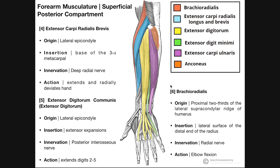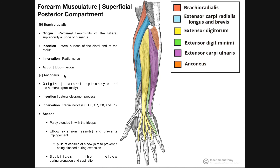The last two muscles are brachioradialis and the anconeus, which are technically part of the posterior compartment of the forearm but were covered in separate videos. Brachioradialis originates on the proximal two-thirds of the lateral supracondylar ridge of the humerus, so it is not a wrist extensor — it just exists in the posterior compartment. Its function is elbow flexion, making it synergistic with biceps brachii and brachialis. Brachioradialis is unique in that it's most active when the forearm is in mid-pronation/mid-supination.